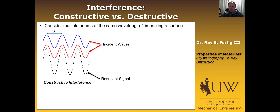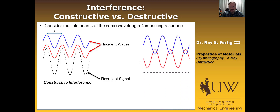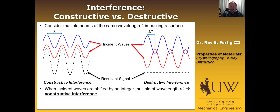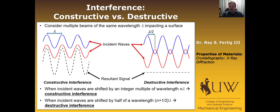In contrast, if one of the waves is shifted by half of a wavelength, they are always canceling each other out — we don't have any signal at all, and we call that destructive interference. So when incident waves are shifted by an integer multiple of the wavelength we have constructive interference; if shifted by n plus one-half times lambda, we have destructive interference.